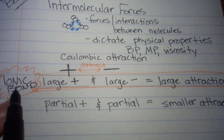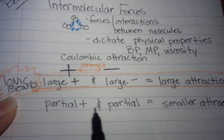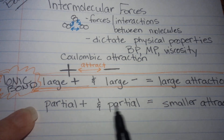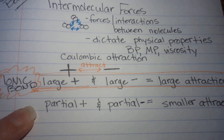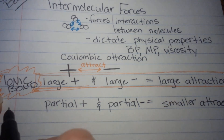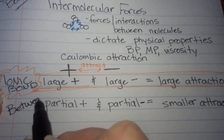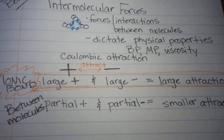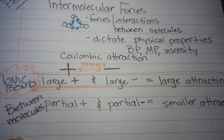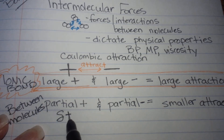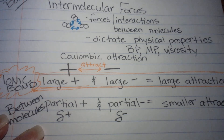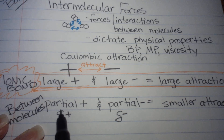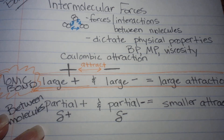This ionic bond makes a permanent, stuck-together sort of attraction, but the partial positive and the partial negative make a smaller attraction — and that is between molecules. We have a symbol for that: a partial positive and a partial negative. That little delta symbol stands for 'partial,' so you'll read it partial positive and partial negative.